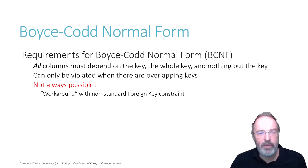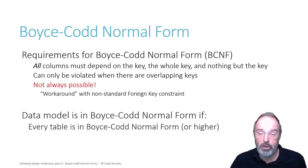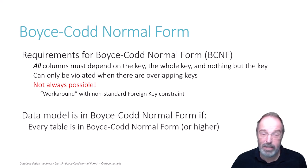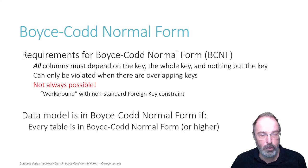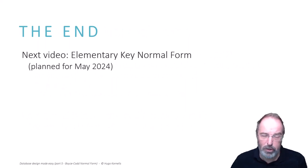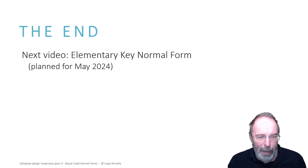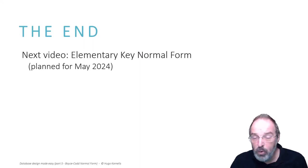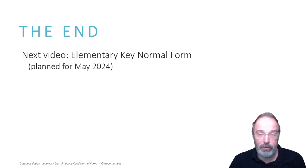So we talked about tables that are or are not in BCNF. And once all your tables are in BCNF, then your data model is in BCNF. That's all I have about Boyce-Codd Normal Form. Now planned for next month, May 2024, and fingers crossed, I plan to talk about elementary key normal form, which is a less useful normal form, but it's still an interesting normal form to look at. So you can check it out once it's available.